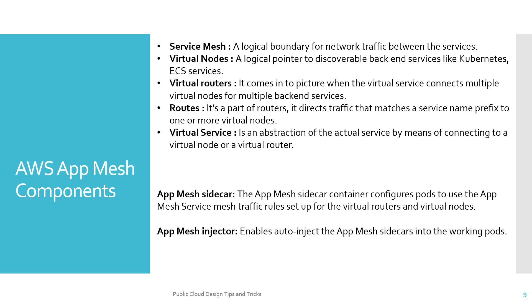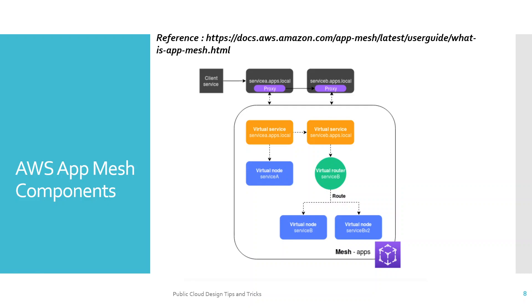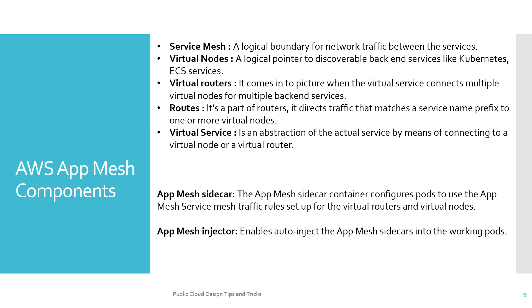A virtual service is an abstraction of the actual service by means of connecting to a virtual node or virtual router — in the diagram, virtual services are the orange elements. Apart from those, we have the App Mesh sidecar container, which configures pods to use App Mesh service mesh traffic rules set up for virtual routers and virtual nodes. The App Mesh injector enables auto-injection of App Mesh sidecars into working pods.